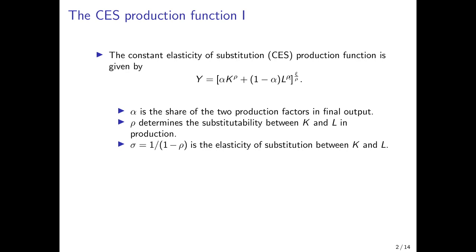Rho is the exponent that determines the substitutability between capital and labor in production. Sigma equals 1 over (1 minus rho) and is the elasticity of substitution between capital and labor. If rho becomes closer to 1, the elasticity of substitution is higher, so the two production factors are easier to substitute. If rho is lower — closer to minus infinity — the elasticity becomes smaller and smaller, making it more and more difficult to substitute the two factors.